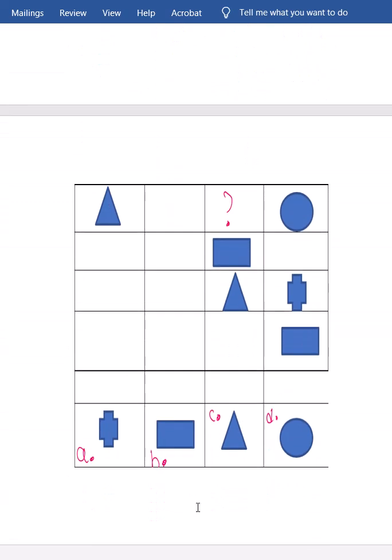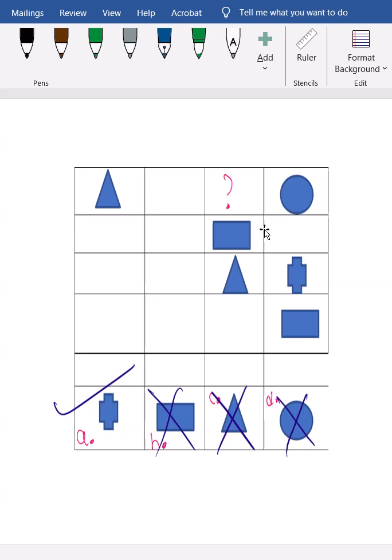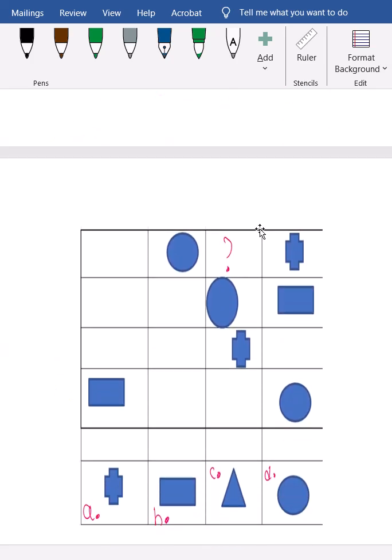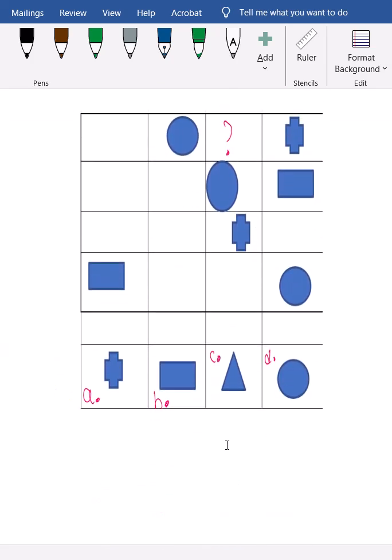Now, in the same fashion, if you observe here, as per row-wise, we cannot get triangle, we cannot get circle. Column-wise, we cannot get rectangle. So answer must be plus symbol. These are basic questions. But they are asking in gaming, in main exam also.